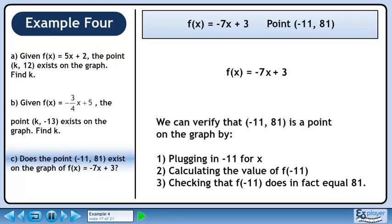We can verify that (-11, 81) is a point on the graph by: 1) plugging in -11 for x, 2) calculating the value of f(-11), and 3) checking that f(-11) does in fact equal 81.